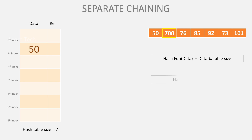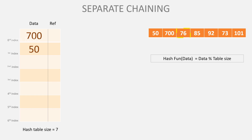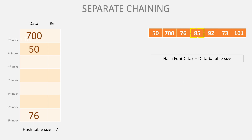The next one is 700. 700 mod 7 equals 0. So at index 0, we store 700 with a null reference. The next one is 76. 76 mod 7 equals 6. So at index 6, we store 76. Next, 85 mod 7...